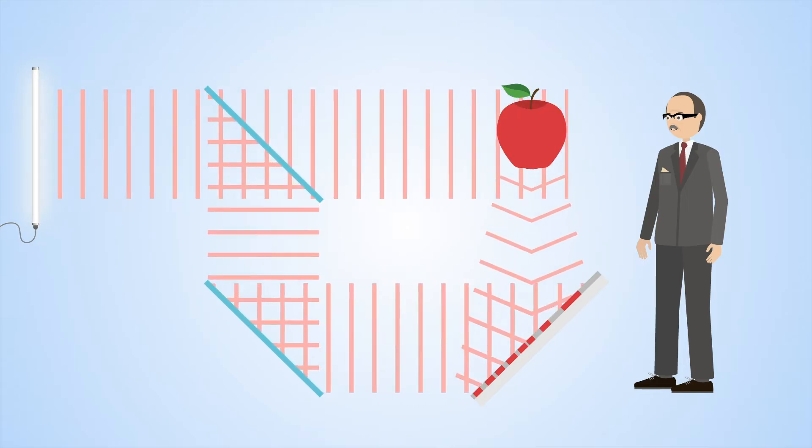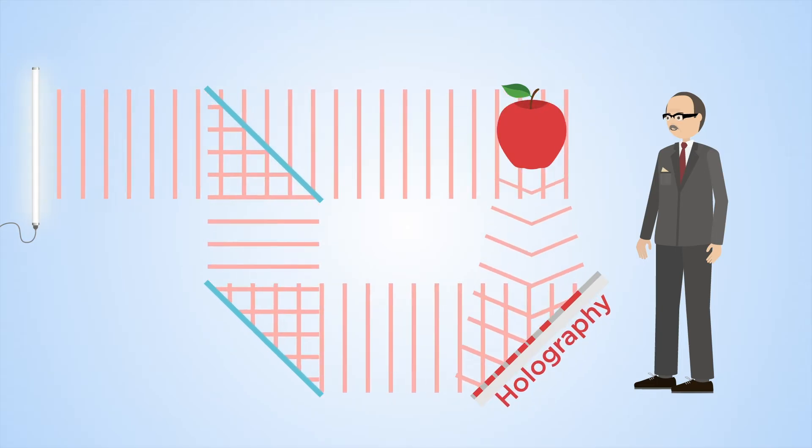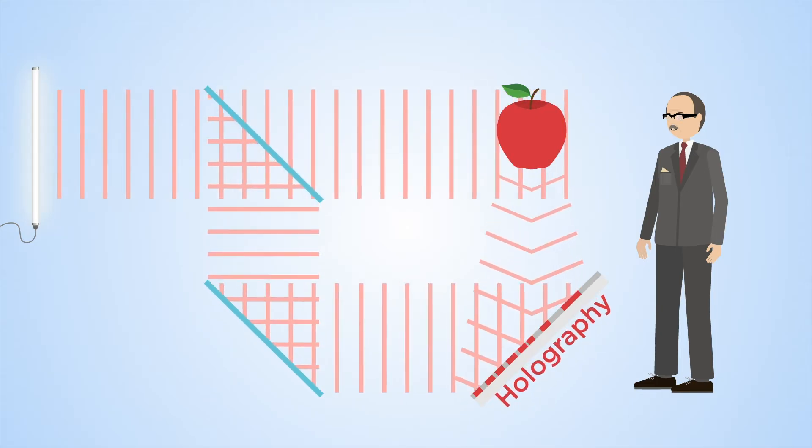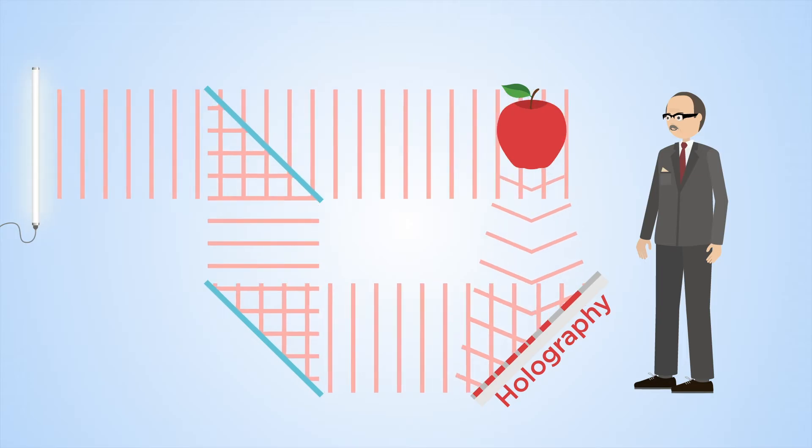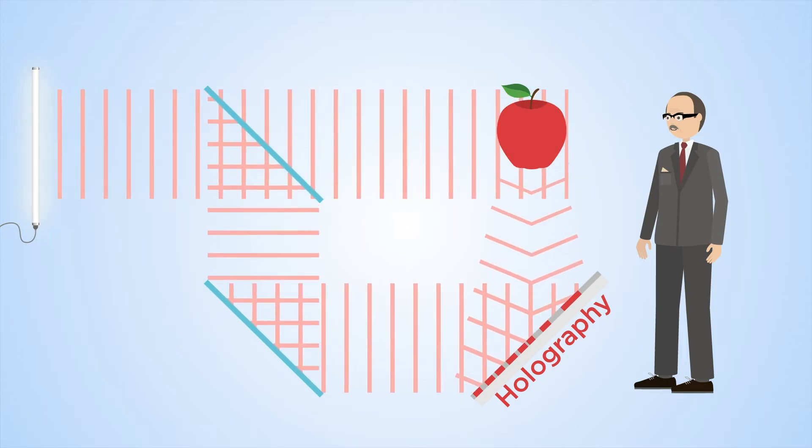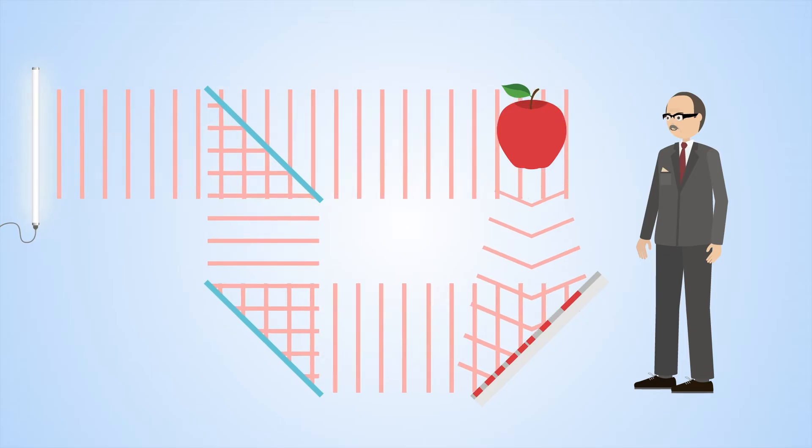Thanks to the invention of the laser in the 1960s, interest in holography took off again. It now had the coherent light source which guaranteed the all-important interference effects required for high-quality images.